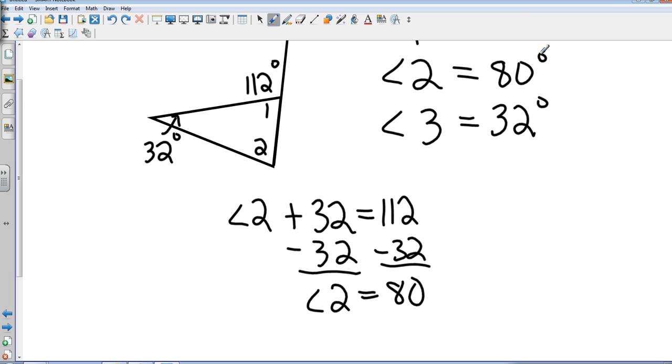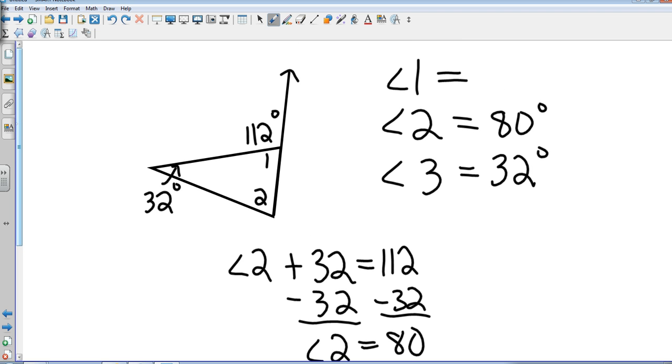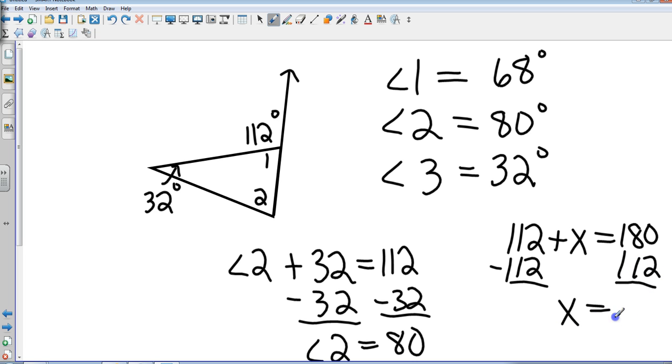Now there's two ways I can find out what angle 1 is. I can notice that angle 1 and 112 are supplementary and so that would give me a degree of 68. I could also take 80 plus 32 which is going to give me 112 and subtract that from 180, which is basically what I just did, and that gives me a total of 68 degrees.